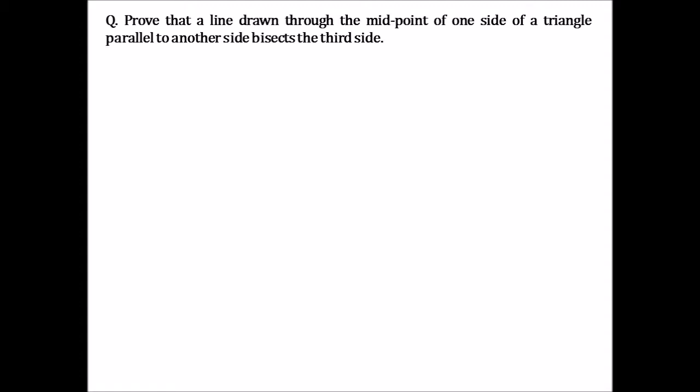It is given to us that we have a triangle. Let us name it as ABC. Let us consider point D to be the midpoint of side AB as it is given to us that one of the sides has a predefined midpoint. Now, we are drawing a line DE parallel to the third side of triangle BC such that it intersects AC at E.